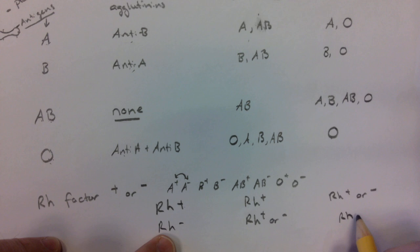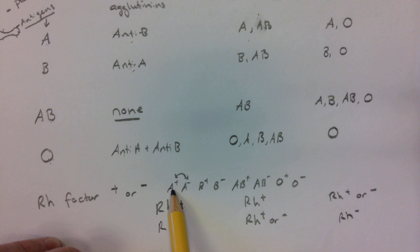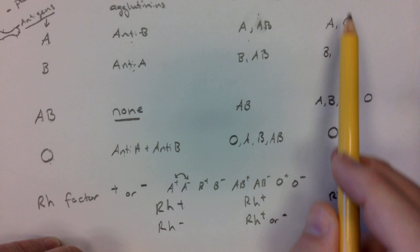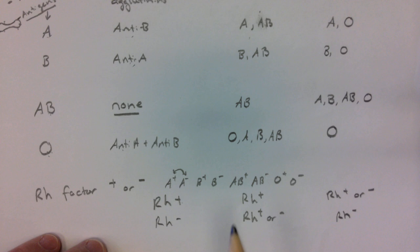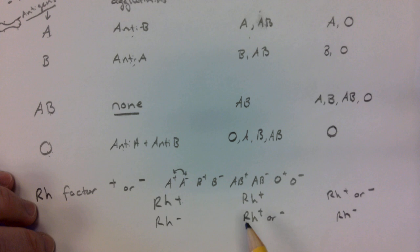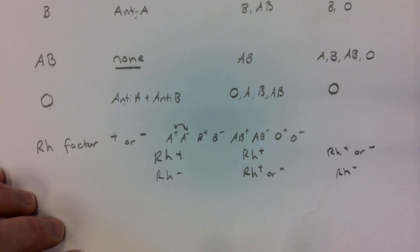For example, AB positive can receive A negative, A positive, O positive, and O negative. We can now combine the ABO information with the Rh information to show what each type can receive from or donate to. Just make sure you understand those positives and negatives, because half the blood is positive and half is negative, so half the blood may not be available for a donation or reception. We have to be very careful when we're typing blood.